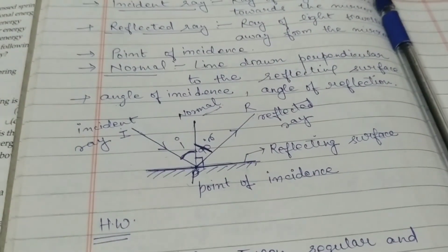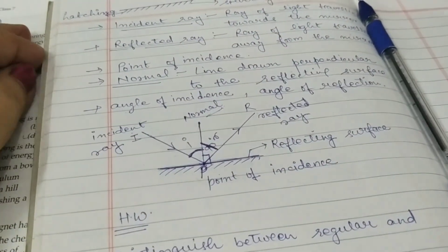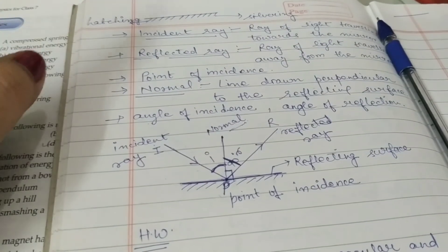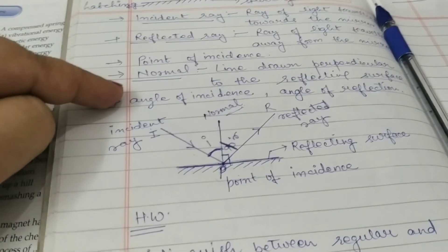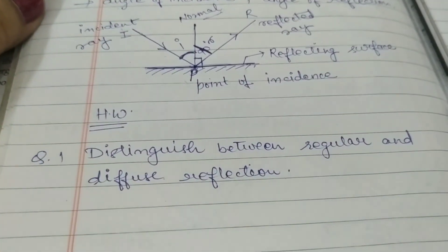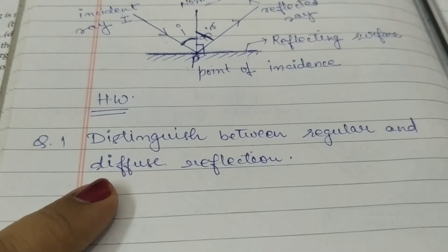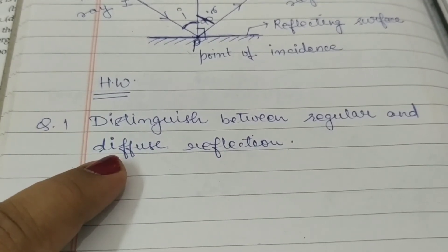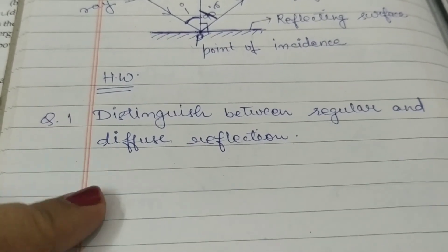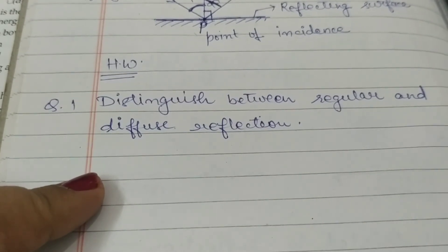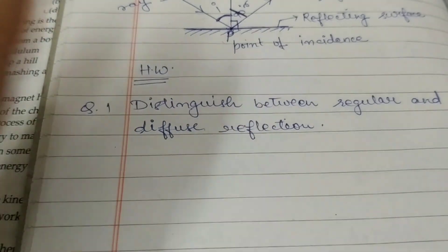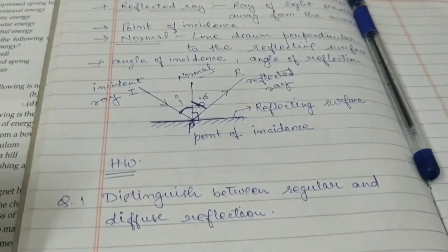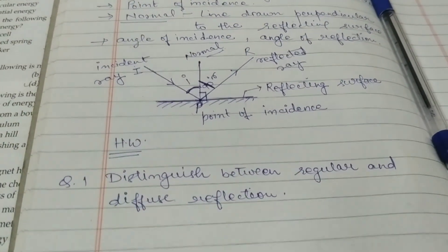Next time we will study image formation from a plane mirror, and you must know all these terms by then. For homework, try the first short answer question: distinguish between regular and diffuse reflection. Write it in your rough copy or find it in the book, and we'll discuss it next lecture. Go through today's material from your book and make sure you know these terms. That's all for today, children. Bye bye.